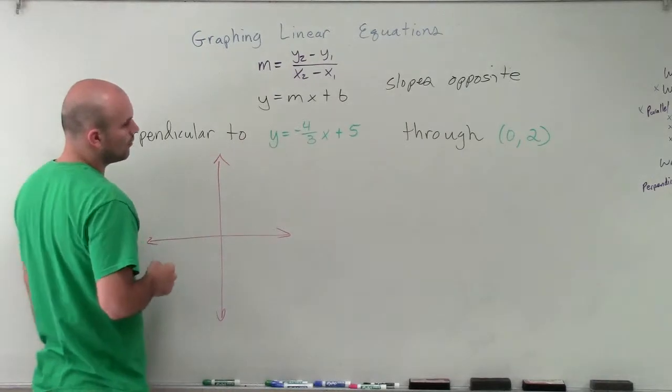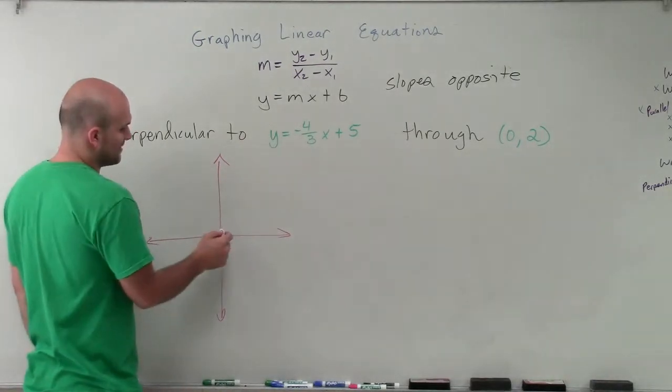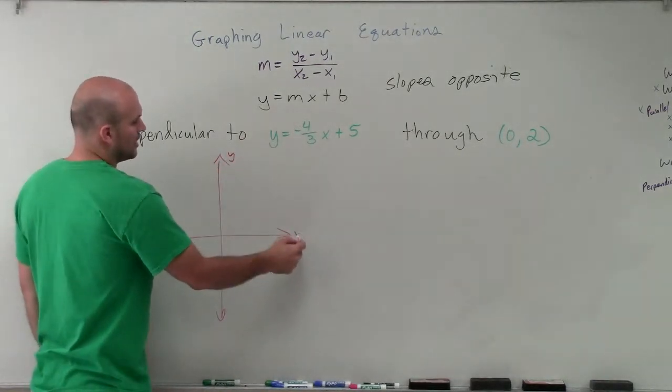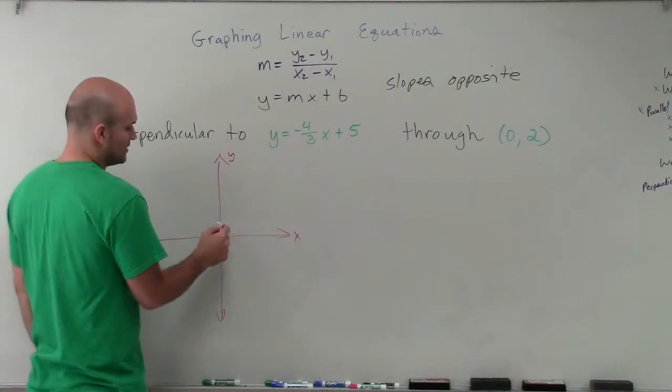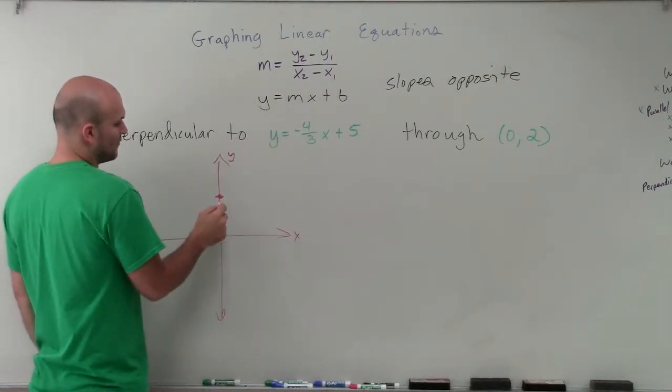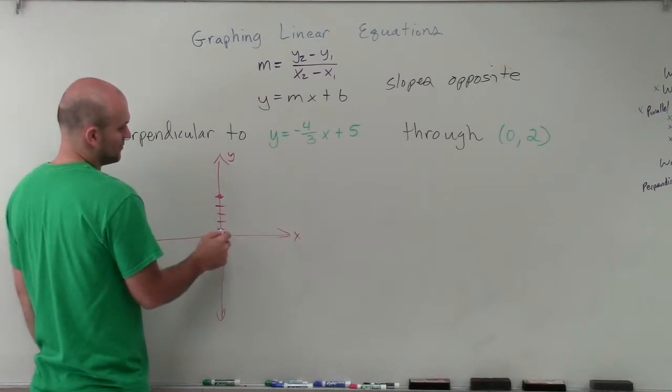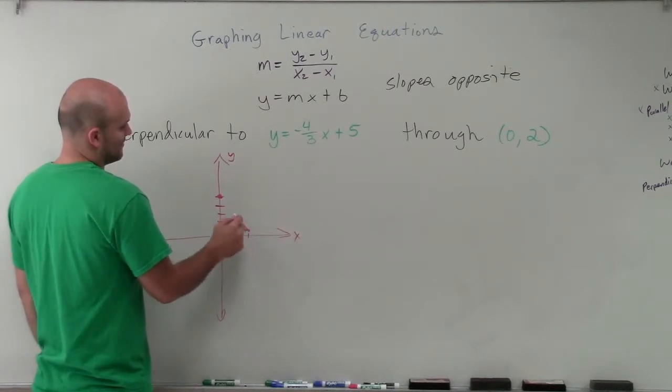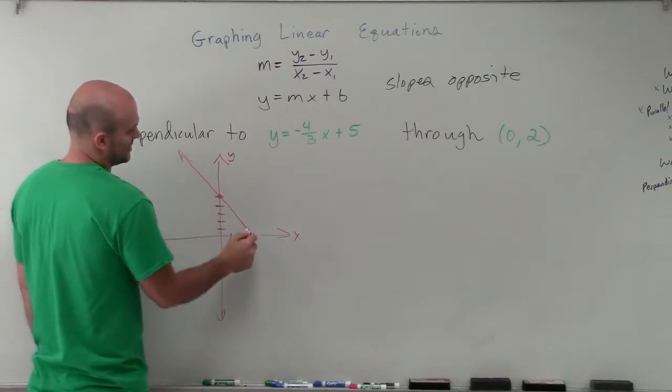So we have an equation y equals negative 4 thirds x plus 5. So that means my y-intercept is going to be at 5: 1, 2, 3, 4, 5. And then I'm going to have a slope of negative 4 over 3. So I'm going to have a graph that's going to look something like this.